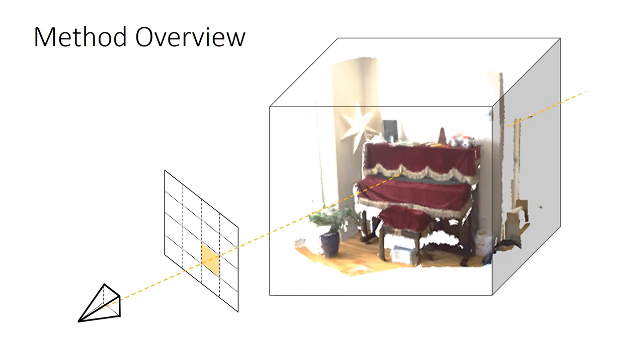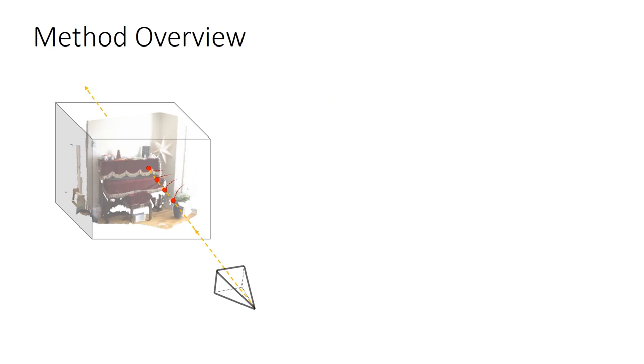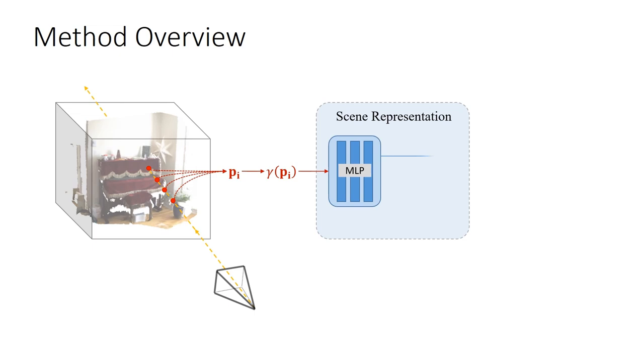On each ray, we sample points for which to evaluate color and signed distance values. These points are first encoded using a positional encoding and then given as input into an MLP which predicts a signed distance value for each of them.